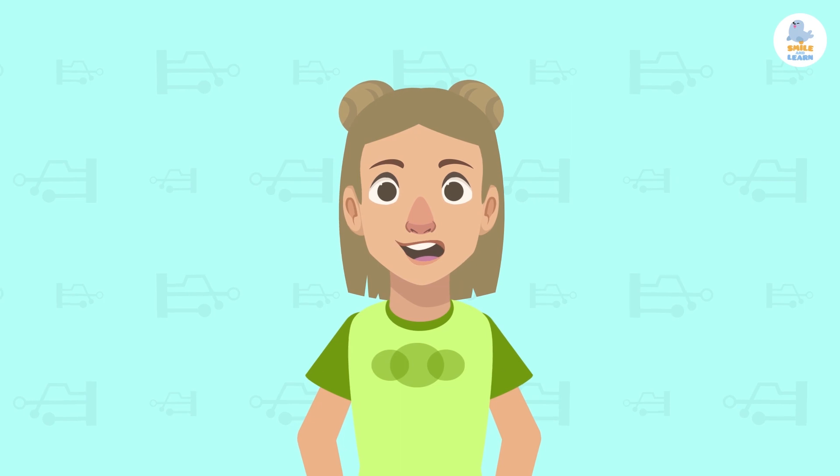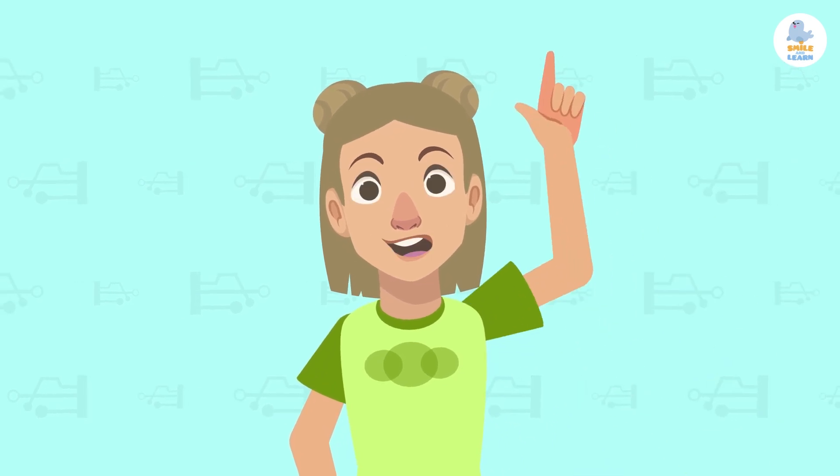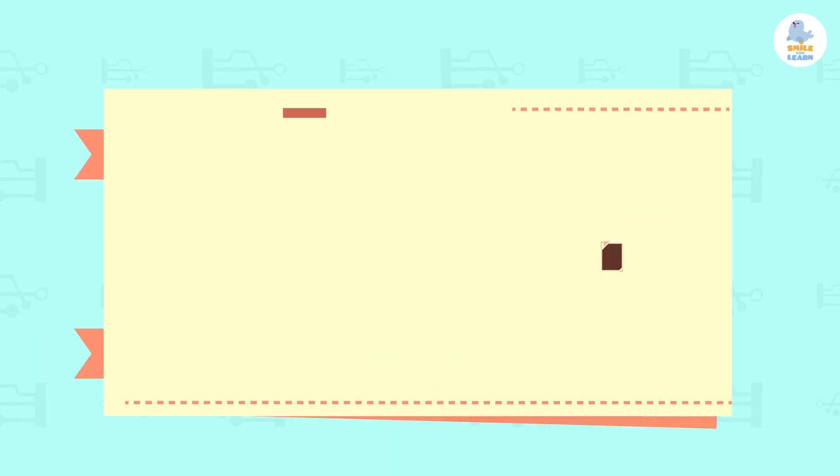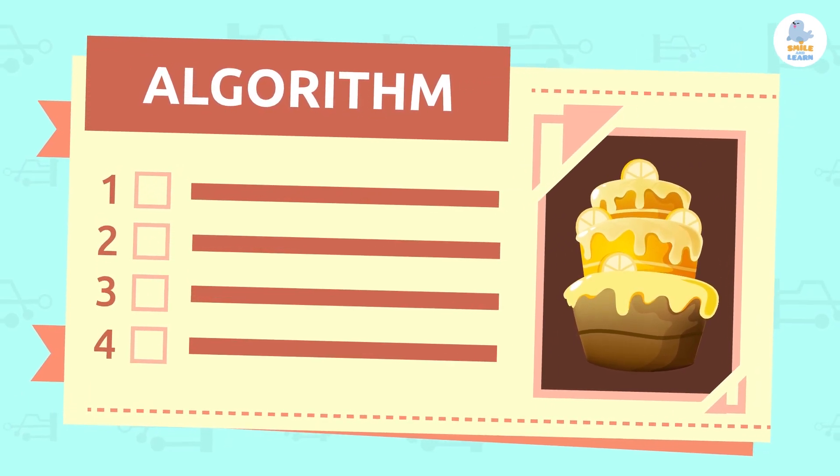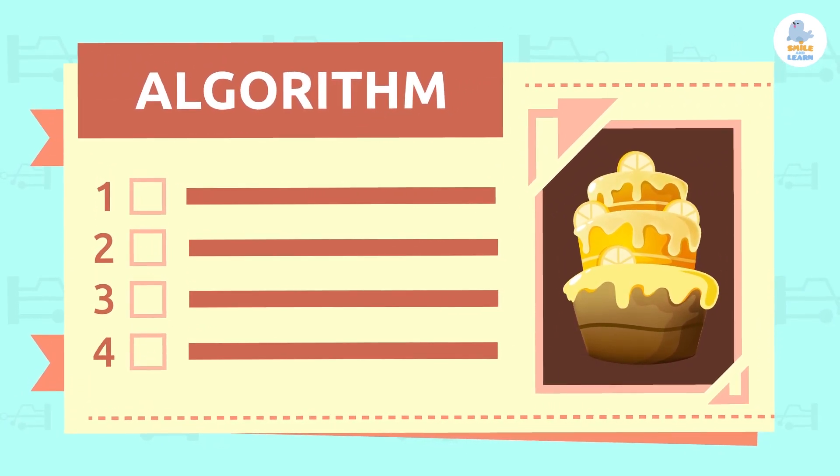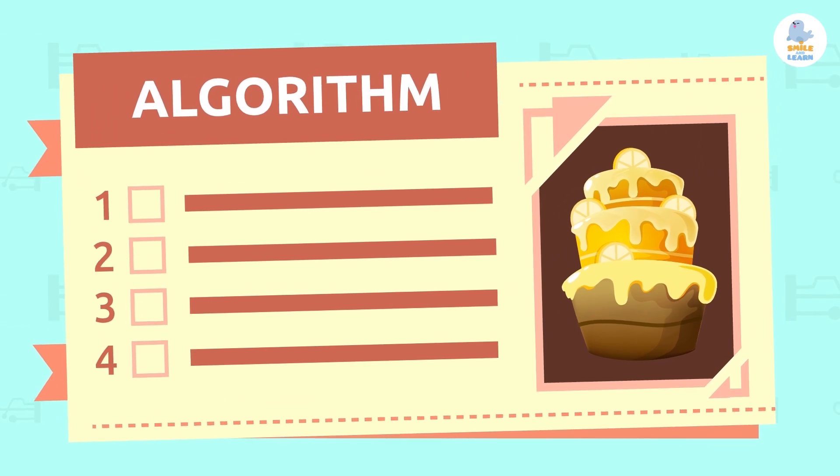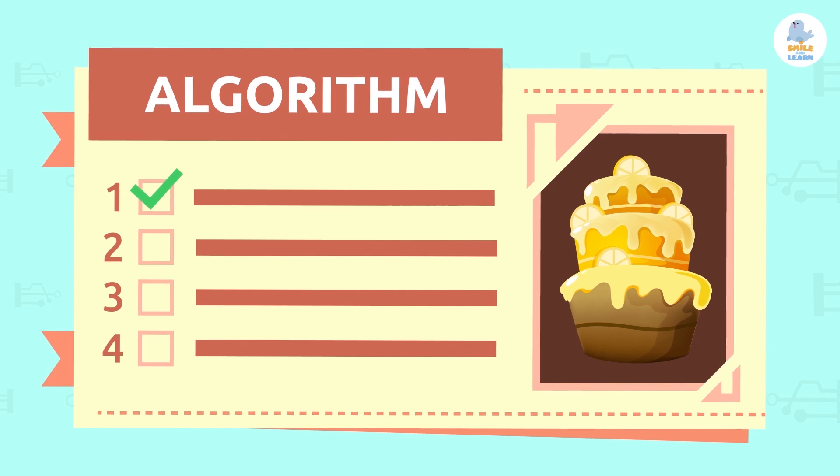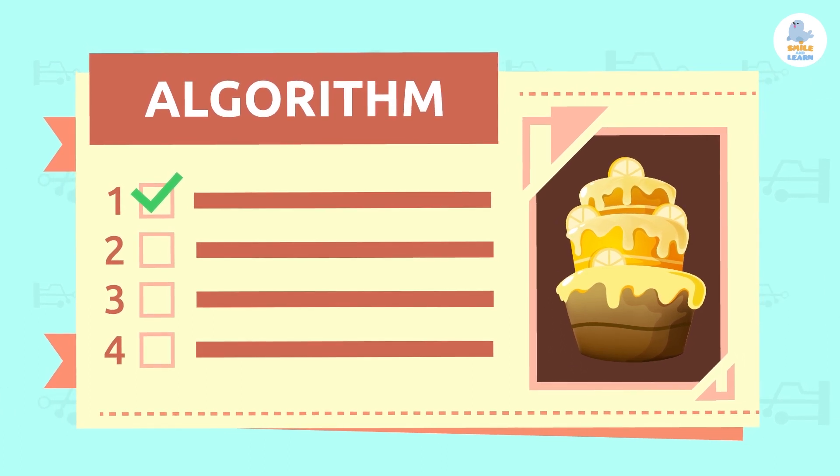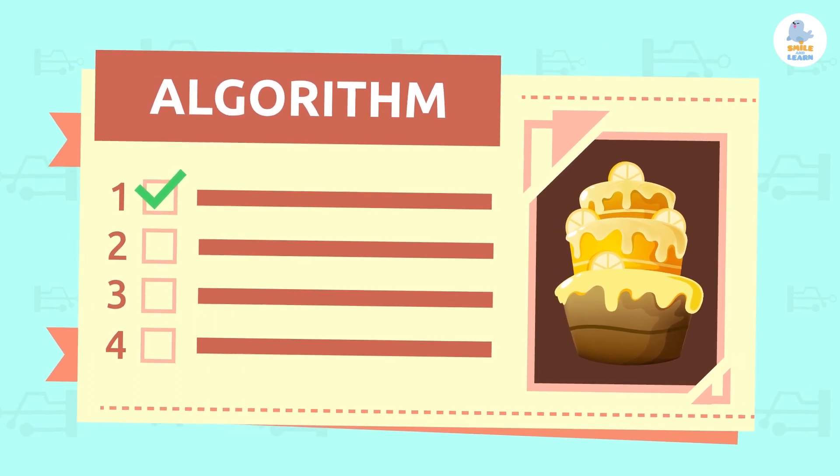Algorithms are the base of programming. Let me explain what they are. Algorithms are a sequence of detailed step-by-step instructions. In programming, algorithms are written by programmers so that a machine can do a task. It's like a recipe where a machine has to follow all the steps carefully.